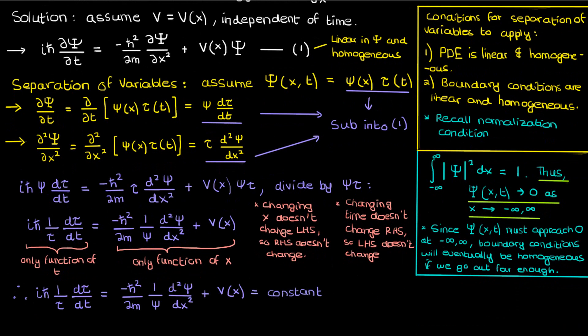You can prove this to yourself by taking the derivatives of both sides with respect to x and t to show that the whole equation actually does equal a constant. And this constant I'm going to call E.